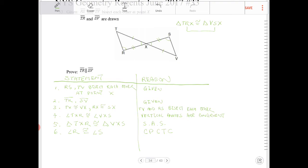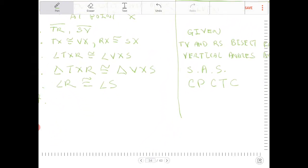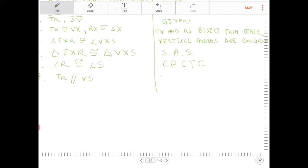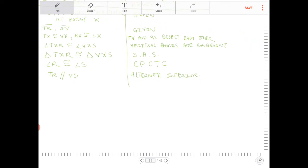We can also then further conclude, based on those two angles being congruent, we can say that TR and VS are going to be parallel, right? Because we have alternate interior angles converse. So TR will be parallel to VS because of alternate interior angles converse.